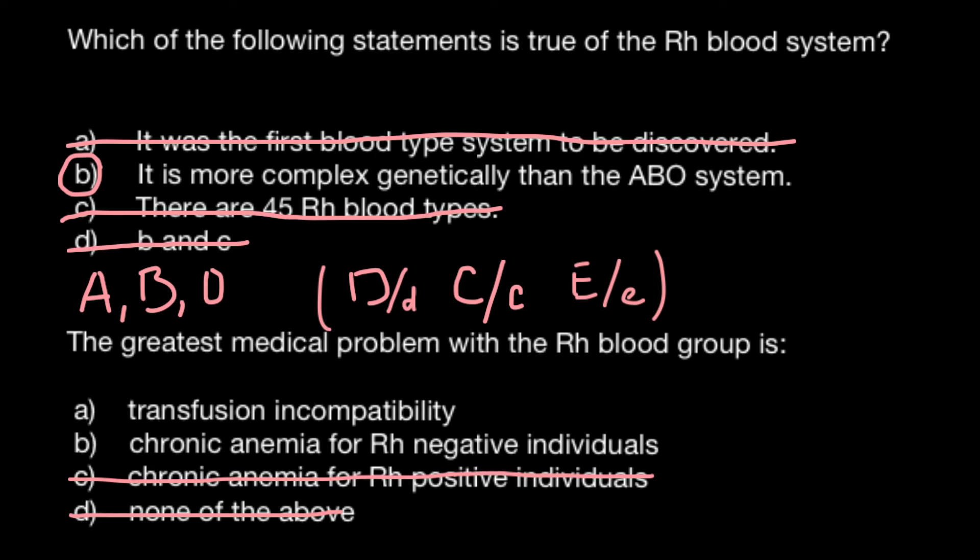Answer B: chronic anemia for Rh negative individuals. This is also not true because the rest, 15% of people, are Rh negative.